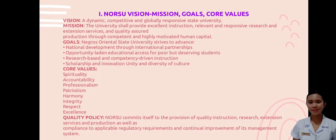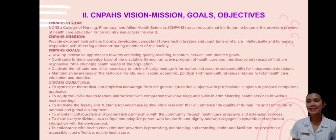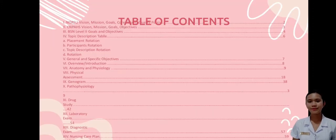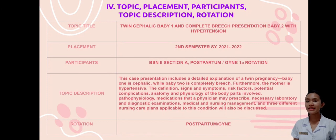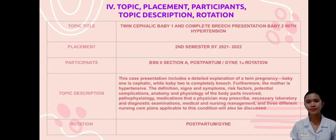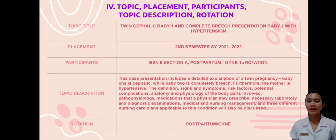Let me present the minor contents of this presentation. These are the nurse's vision, mission, goals, and core values; next is the CINFES vision, mission, goals, and objectives; then the BSN level 2 objectives; and the table of contents. For our topic placement, participants, topic description, and rotation — our topic title is Twin Cephalic Baby 1 and Complete Breech Presentation Baby 2 with Hypertension. Our placement is second semester, school year 2021 to 2022, and BSN level 2, section A, postpartum or gynae first rotation group are the participants.